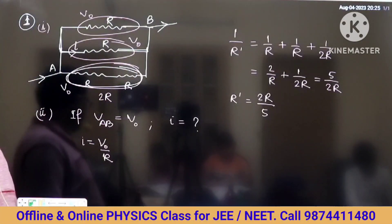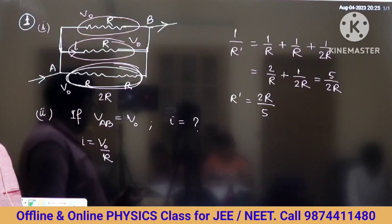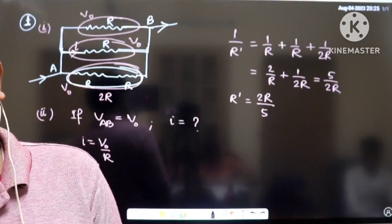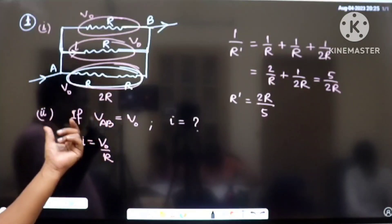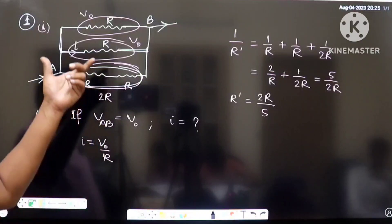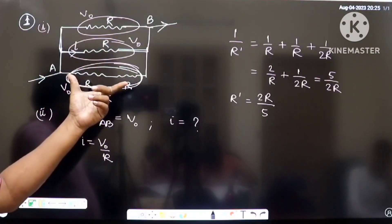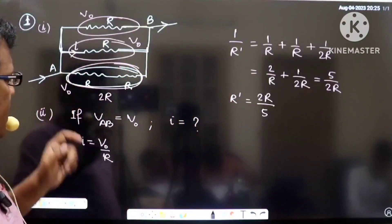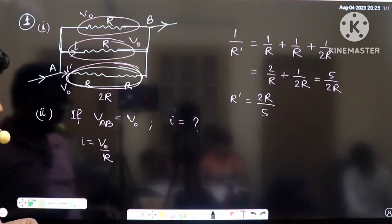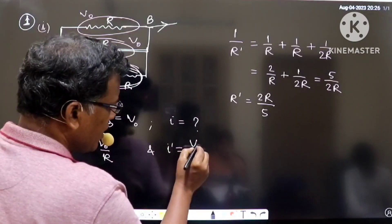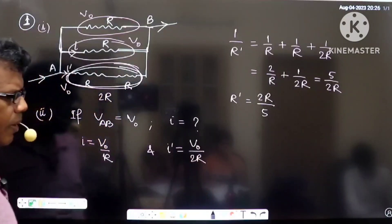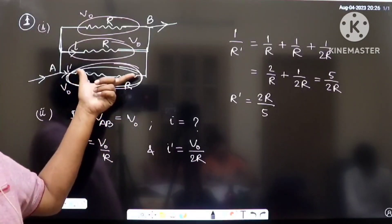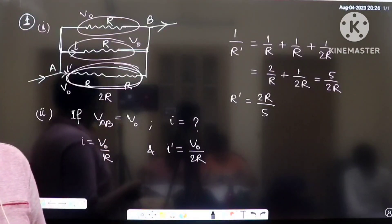Using I = V/R, current equals the applied voltage in that branch divided by the resistance available. The potential difference across the branch is V0, which is given as VAB. The lower branch has two R resistors in a series connection, so the overall resistance in the lower branch is 2R. Therefore the current in the lower branch is V0 by 2R.